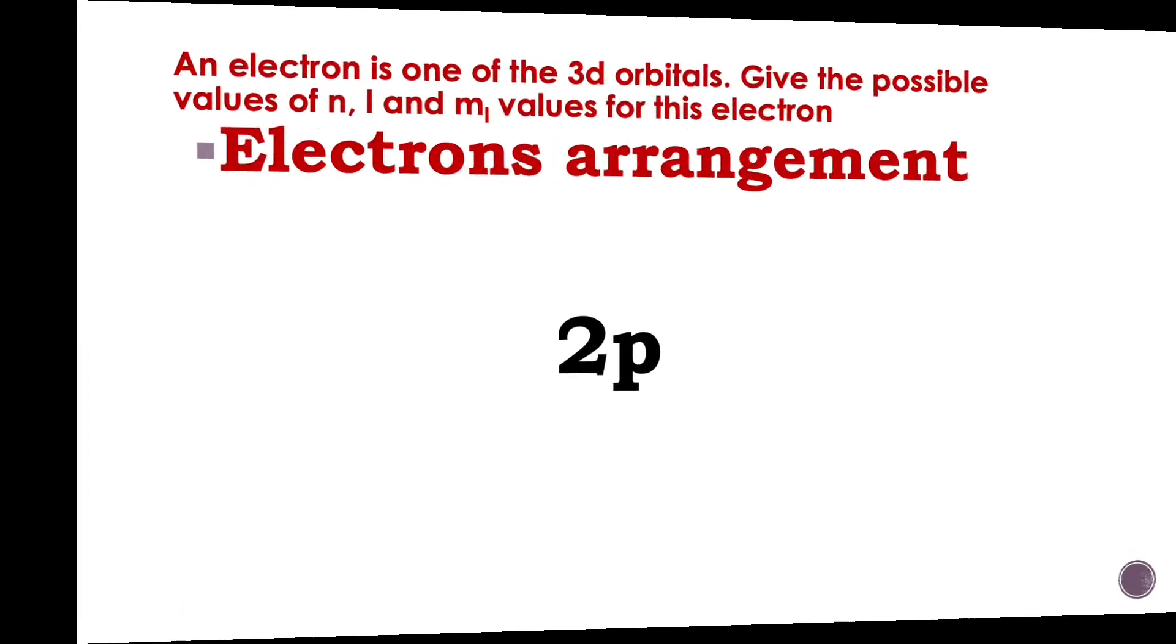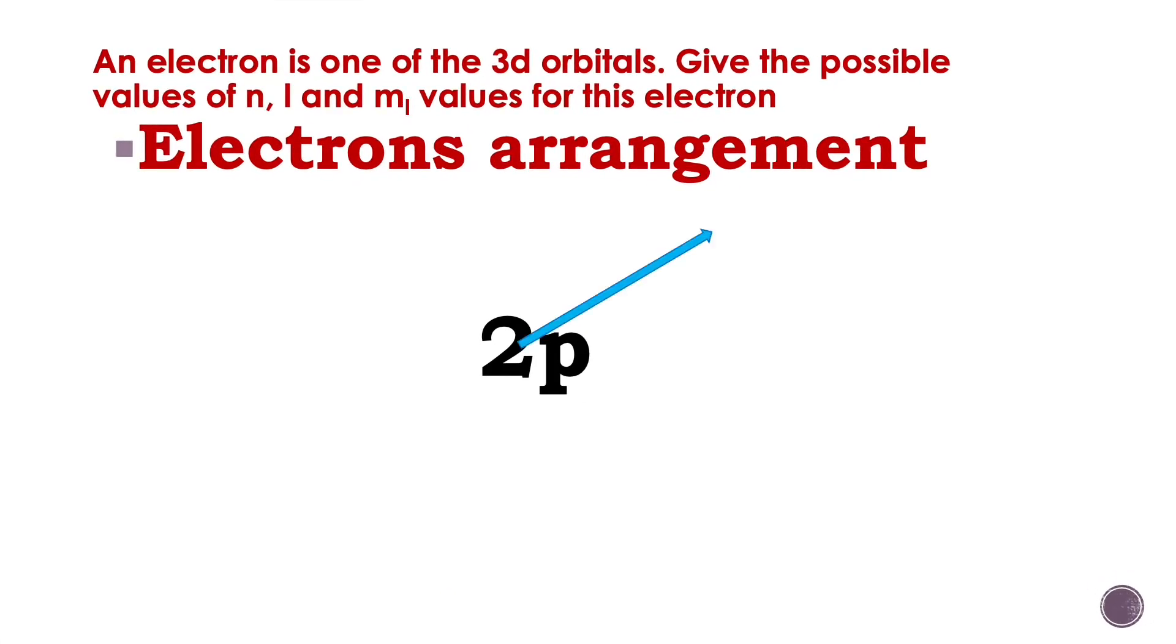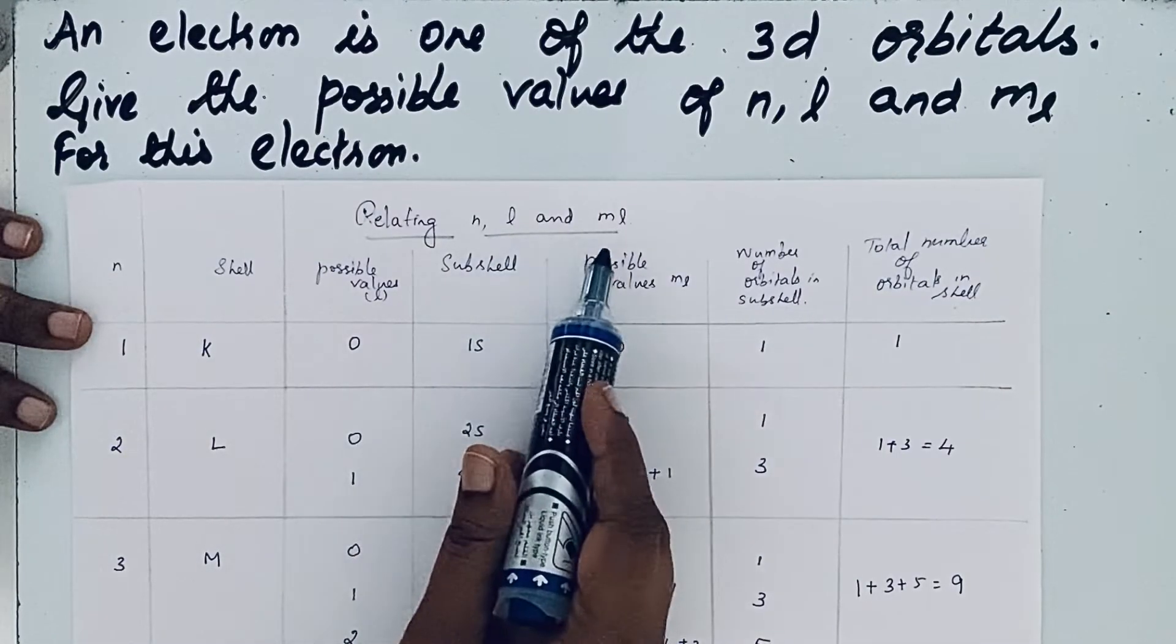For example, 2p stands for p subshell of the second shell. Before solving the question, first let us see the relation between n, l, and ml values.